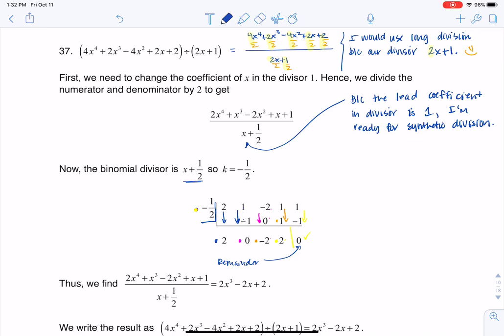Okay, so since I started with a 4th degree polynomial, this is going to help me, or I should say these coefficients here are going to help me with my remaining factor. So since I started with a 4th degree, I'm going to go 2x cubed.